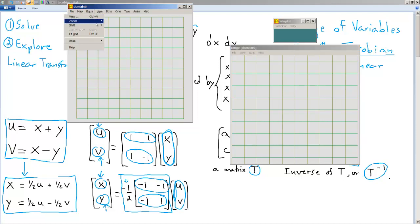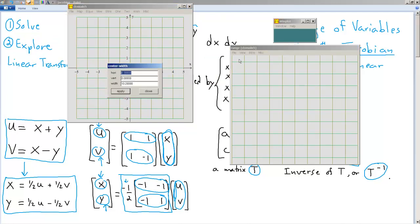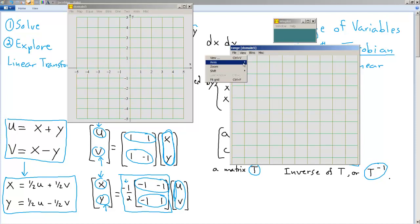And what we want to do is we want to view axes, first of all, so we have some idea of what our axes are. And over here, we'll go to View, Axes, and do the same thing. And you can see this is XY, and this is labeled as UV space.